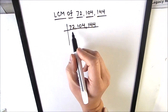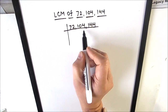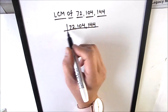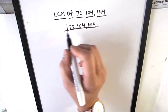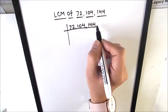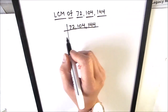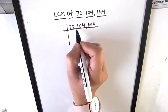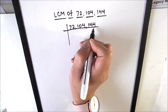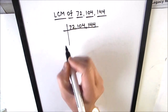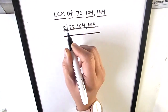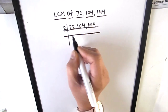So let's divide 72, 104 and 144 using prime factorization. We will be using a single ladder, that means we are going to divide all three numbers together on a single ladder. As 72, 104 and 144 are even numbers, we can divide all three numbers by the first prime number 2.